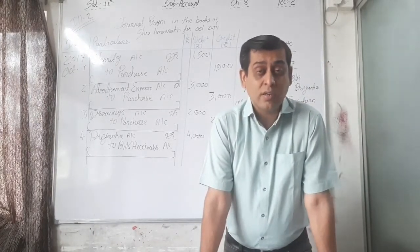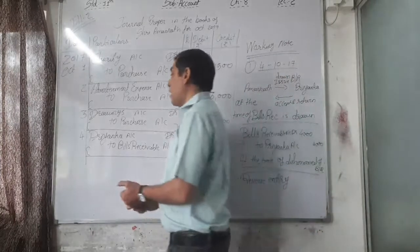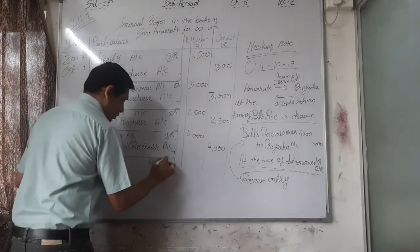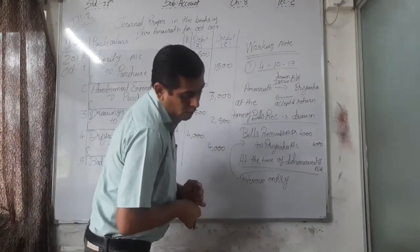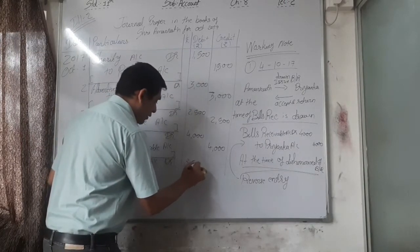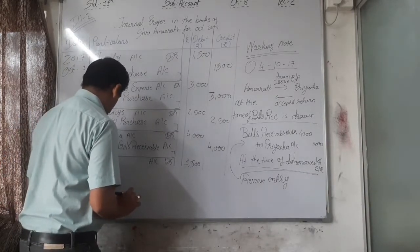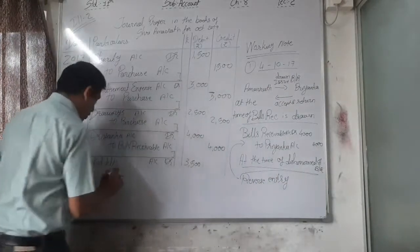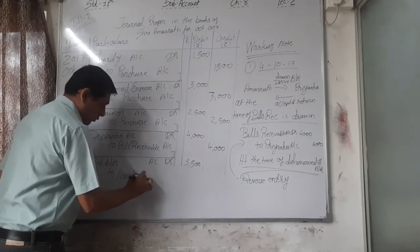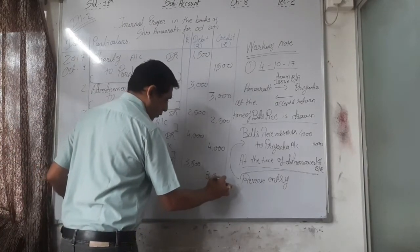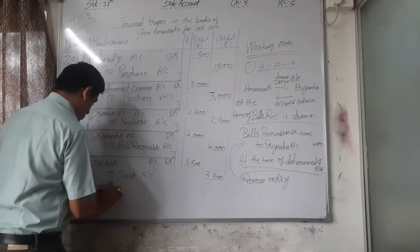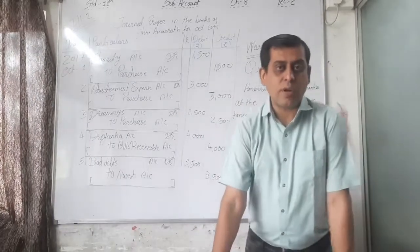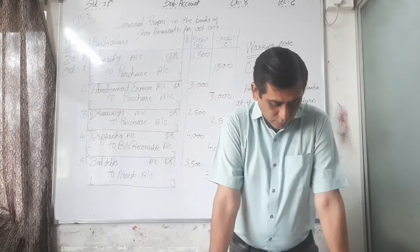Bad debts is our loss — not an expense, but a loss — so bad debts account is debited. To Naresh account 3,500, because Naresh is the party name and he is the creditor of this bad debt. Narration: being bad debts of rupees 3,500 due from Naresh. Fifth entry is over.